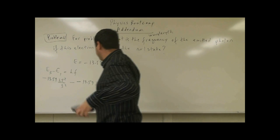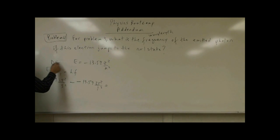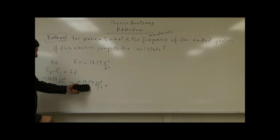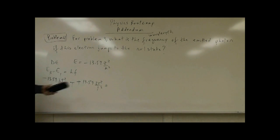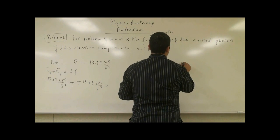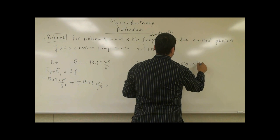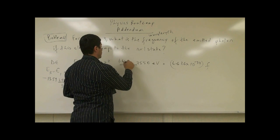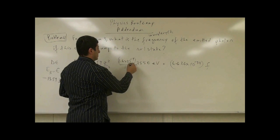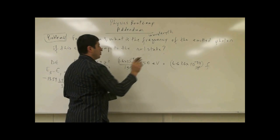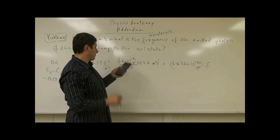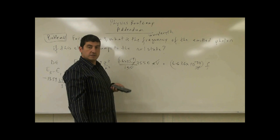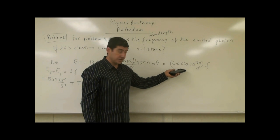The minus sign from the change in energy and the minus sign from the negative energy in the first state cancel, so you end up with a positive difference. Set that equal to Planck's constant, 6.626 times 10 to the minus 34, times the frequency. Remember, one electron volt equals 1.6 times 10 to the minus 19 joules — so multiply your answer by that conversion factor, then divide by Planck's constant to get the frequency.